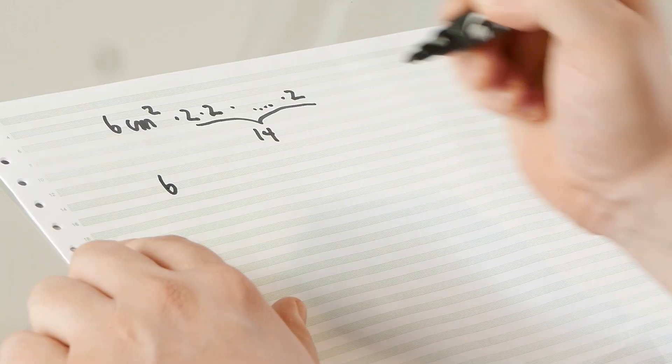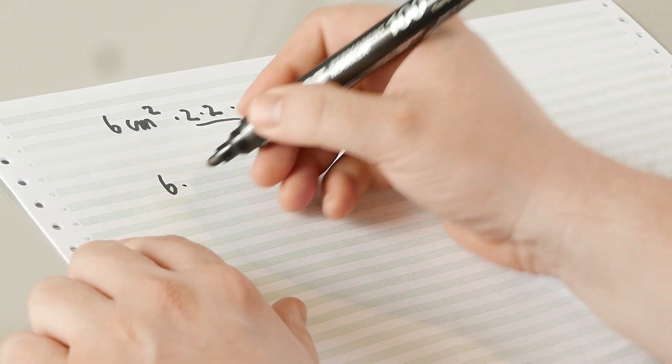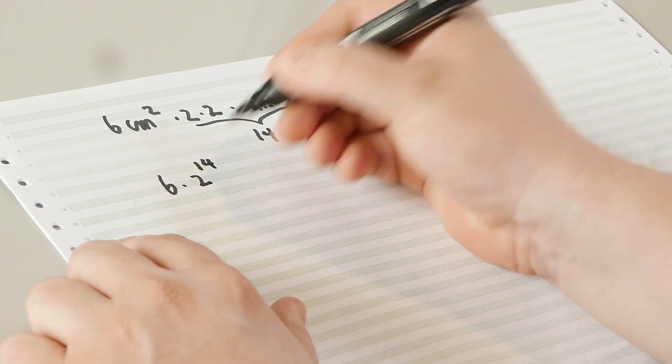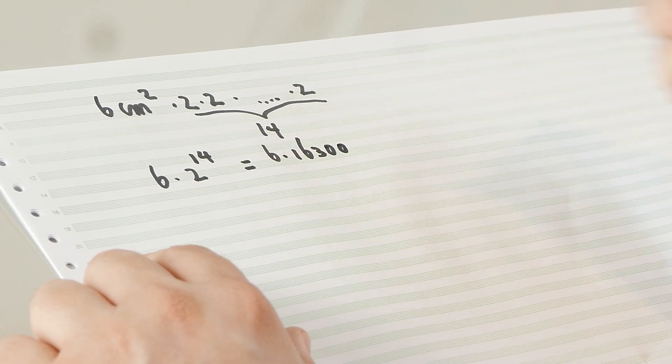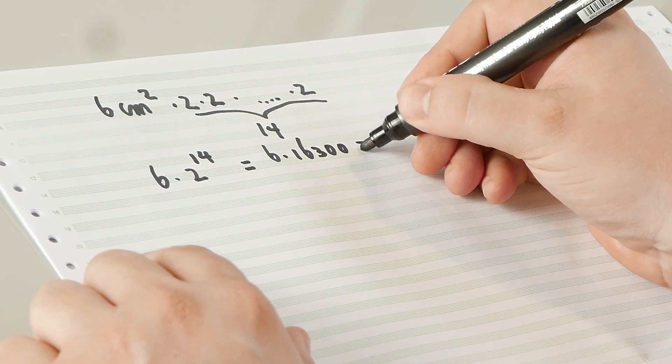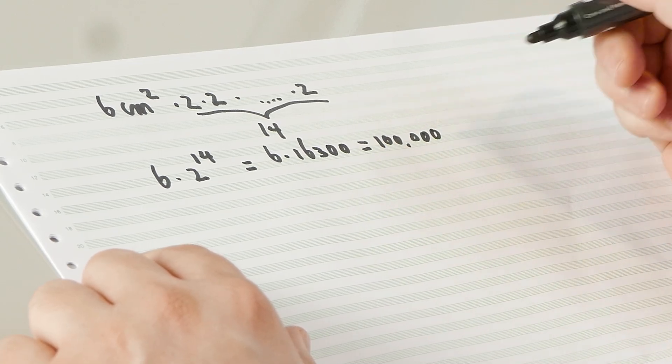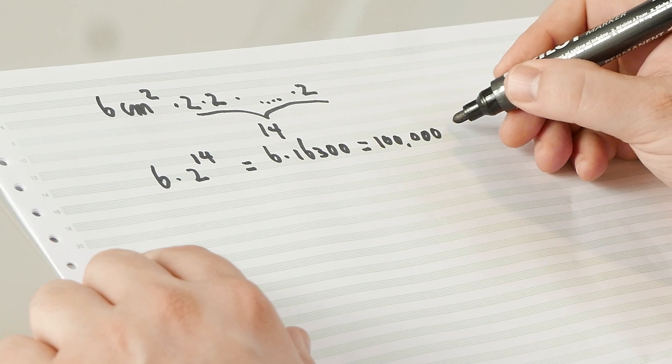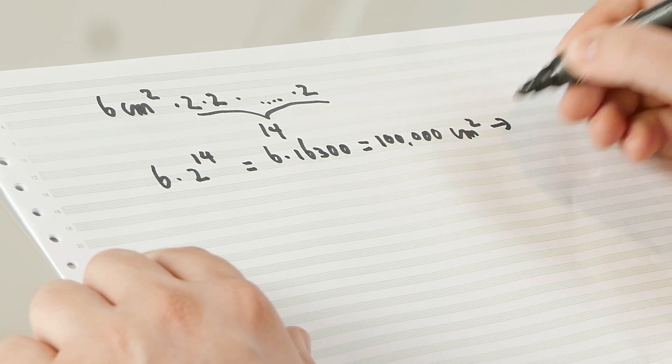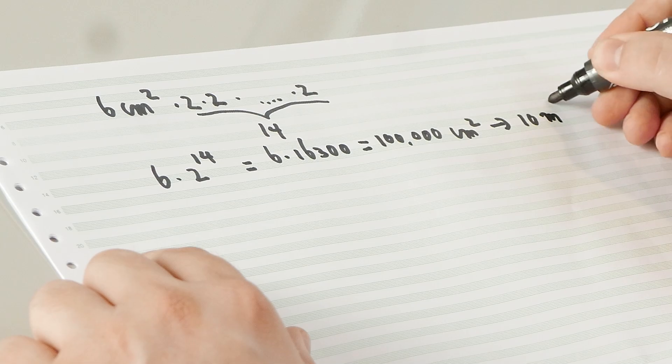Now I think almost everyone will be aware of a different way of writing this down which is simply to say we have the six square centimeters times two to the power 14. And two to the power 14 is roughly 16,000 16,300 roughly. And if we multiply these two numbers what we get is a hundred thousand square centimeters. So remember that's the original unit. So this remains the unit and it means that it's 10 square meter. We all know that exponential growth has an exponent. There's no surprise there. But we can generalize away.